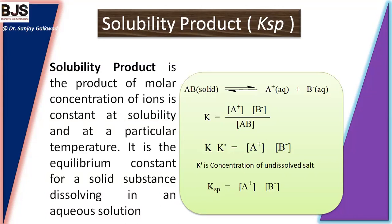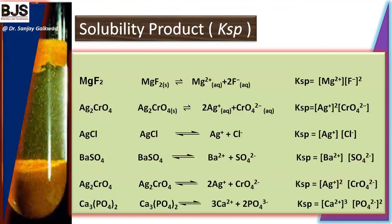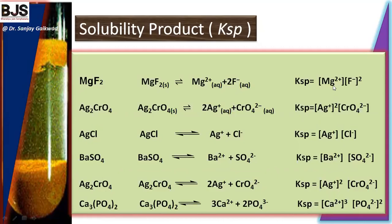This product is called the solubility product of the compound. Solubility and solubility product are most important in precipitation formation. For example: for magnesium fluoride, Ksp equals [Mg²⁺][F⁻]²; for silver chromate, Ksp equals [Ag⁺]²[CrO₄²⁻]; for silver chloride, Ksp equals [Ag⁺][Cl⁻]; and for barium sulfate, Ksp equals [Ba²⁺][SO₄²⁻]. These Ksp values represent the solubility product when the salt dissolves in a particular amount of solvent at a particular temperature.